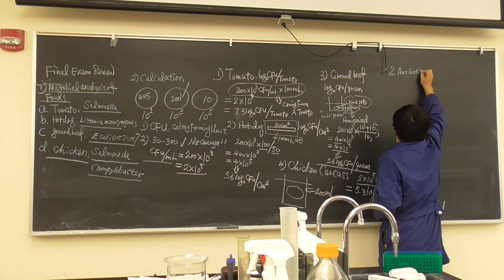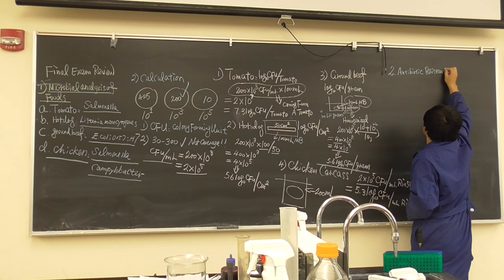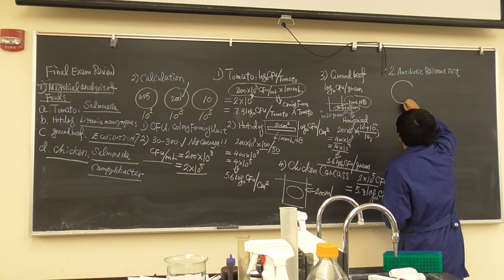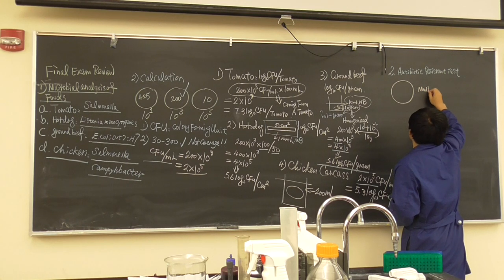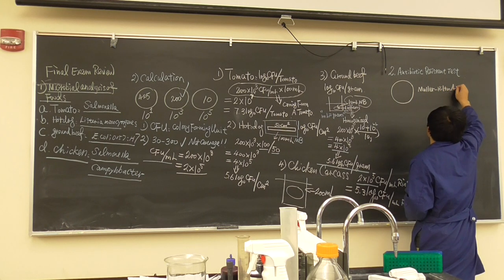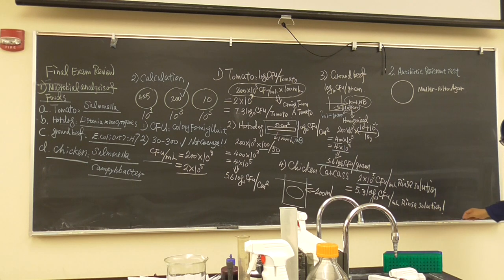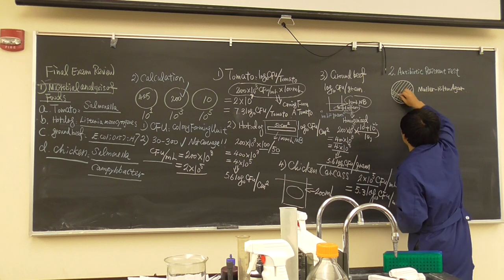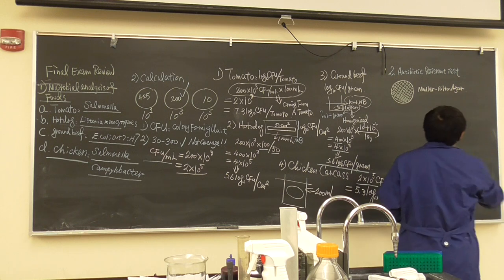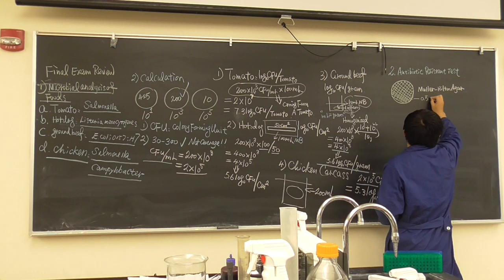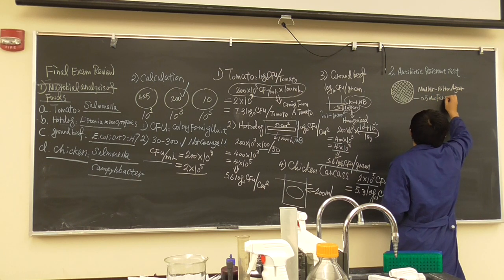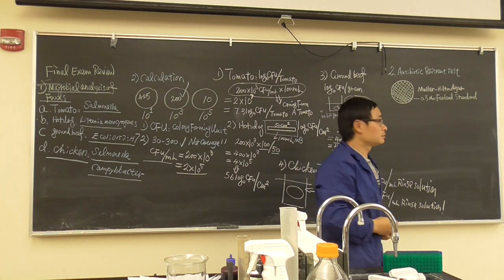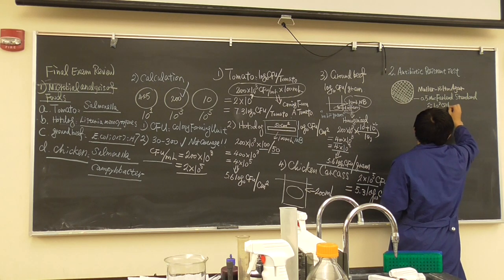The second topic is the antibiotic resistance test. We used Mueller-Hinton agar. We added bacteria using a cotton swab, swabbing back and forth and turning 90 degrees. The bacterial concentration we used was 0.5 McFarland standard, which is approximately 10⁸ cells per mL. Then we used a dispenser to add antibiotic discs — for example, P10 for penicillin and 30 TE for tetracycline at 30 micrograms.